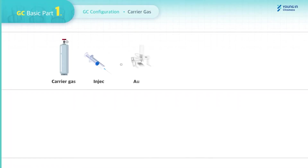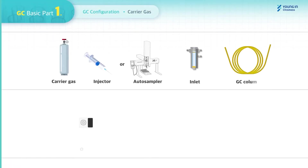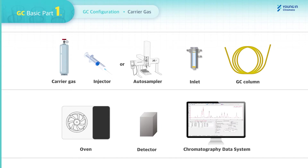Before getting into the Carrier Gas and Basics of GC, let's see how GC is configured. Generally, GC is configured with Carrier Gas, an injector which can be a manual syringe or auto-sampler, an inlet, a column, an oven, a detector, and a CDS chromatography data system.